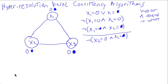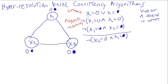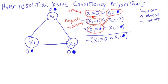If you have a first statement that is a bunch of 'or's, and then subsequent statements are no-goods — a 'not' symbol followed by things joined by 'and' — and furthermore the literals match (this one matches this one, and this one matches this one), then you can take the remaining parts and they become a new no-good. That's the hyper-resolution rule.